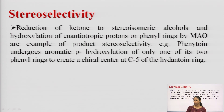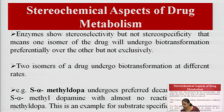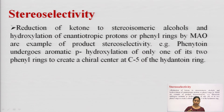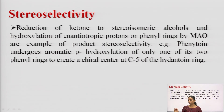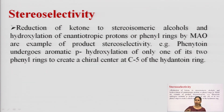Regarding stereoselectivity, the reduction of a ketone to stereoisomeric alcohols and hydroxylation of enantiotopic protons or phenyl rings by MAO are examples of product stereoselectivity. One example is the aromatic para-hydroxylation of phenytoin — when para-hydroxylation occurs, a chiral center is created at C5 of the hydantoin ring. This is an example of product stereoselectivity.